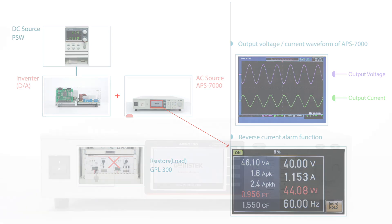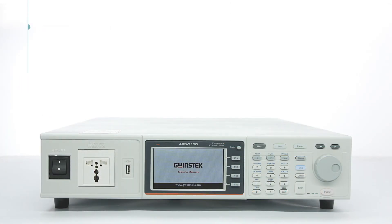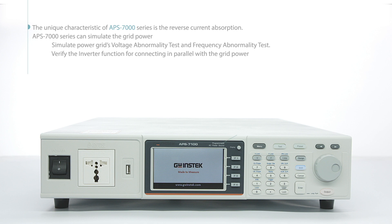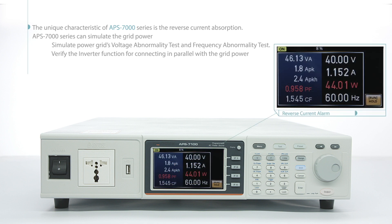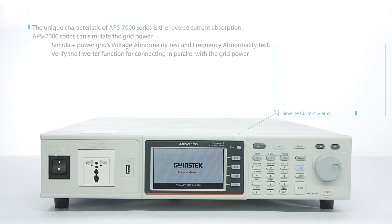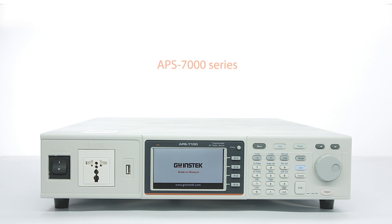The unique characteristic of the APS-7000 series is reverse current absorption. The APS-7000 series can simulate grid power, simulate power grid voltage abnormality tests and frequency abnormality tests, and verify the inverter function for connecting in parallel with the grid power. The APS-7000 series is the best choice among AC power sources for simulation, measurement, and testing.